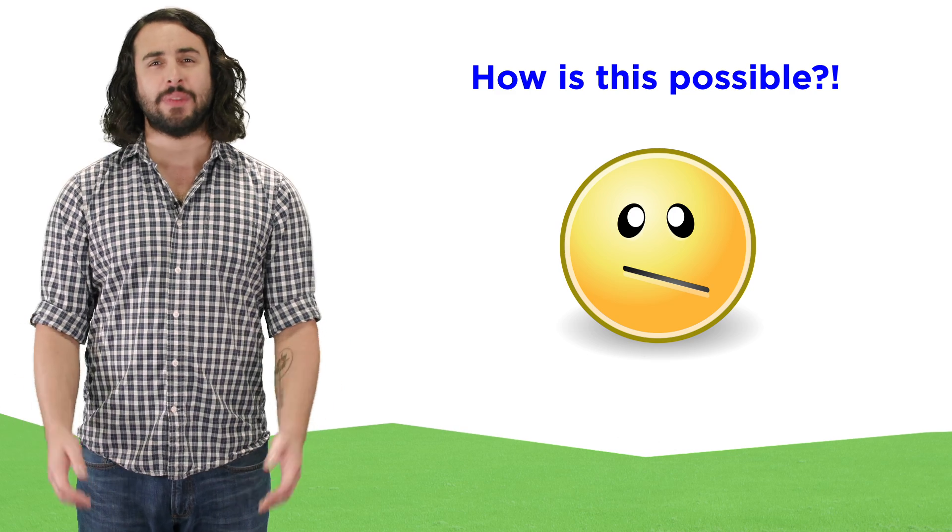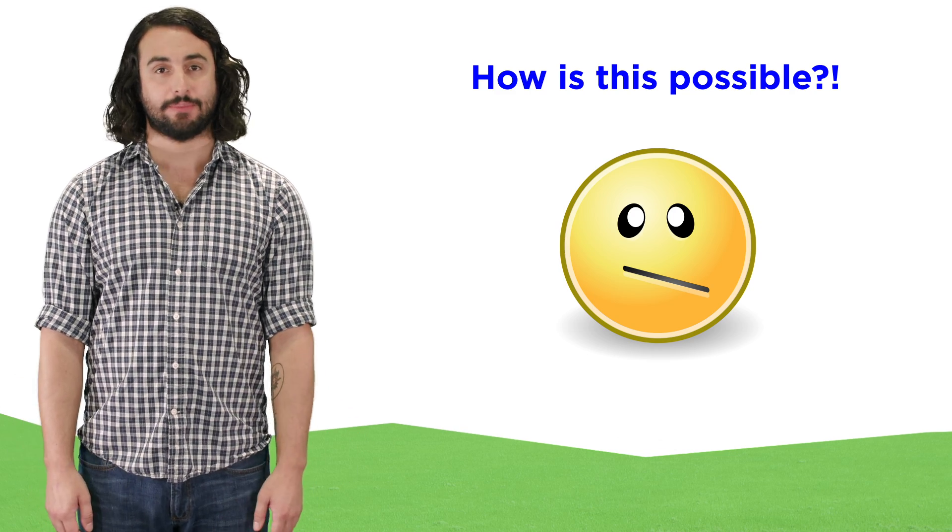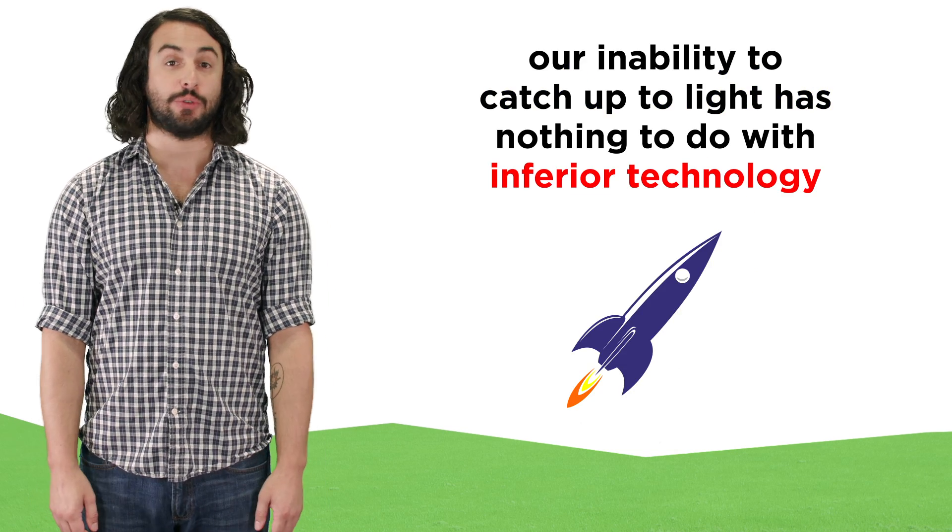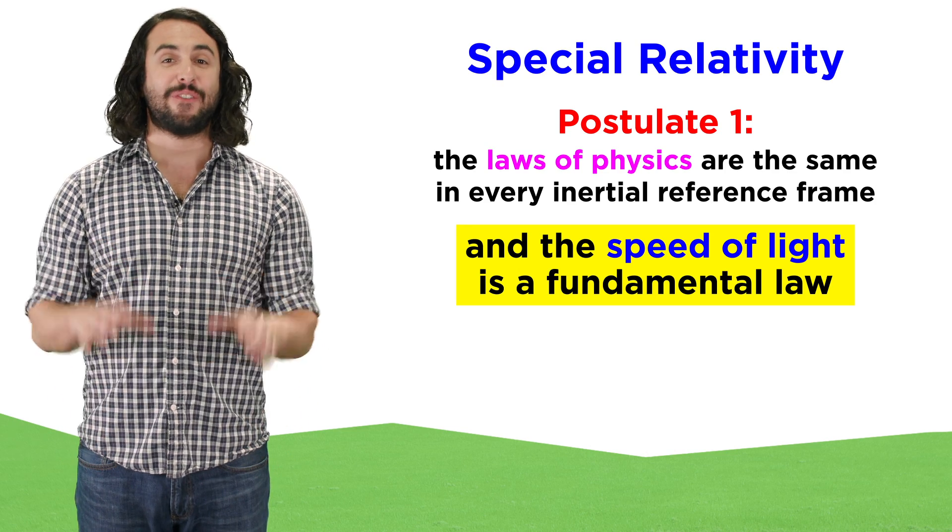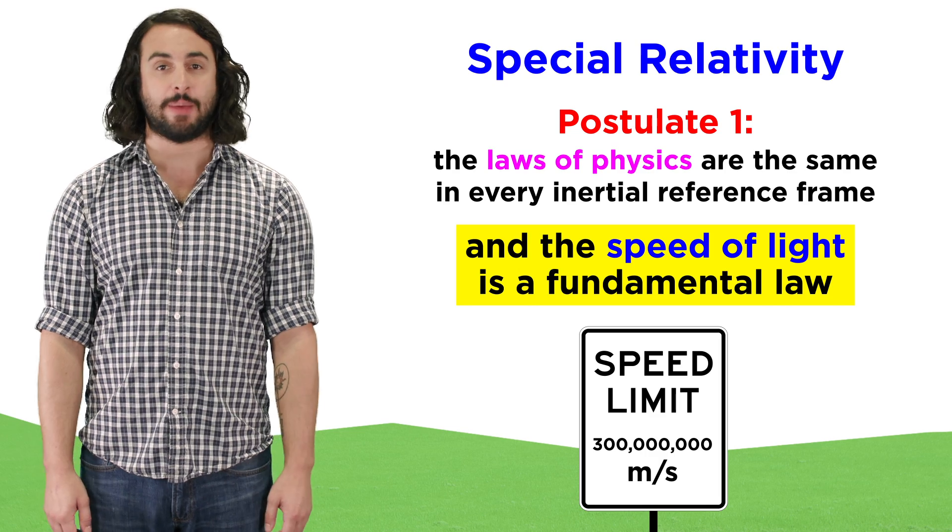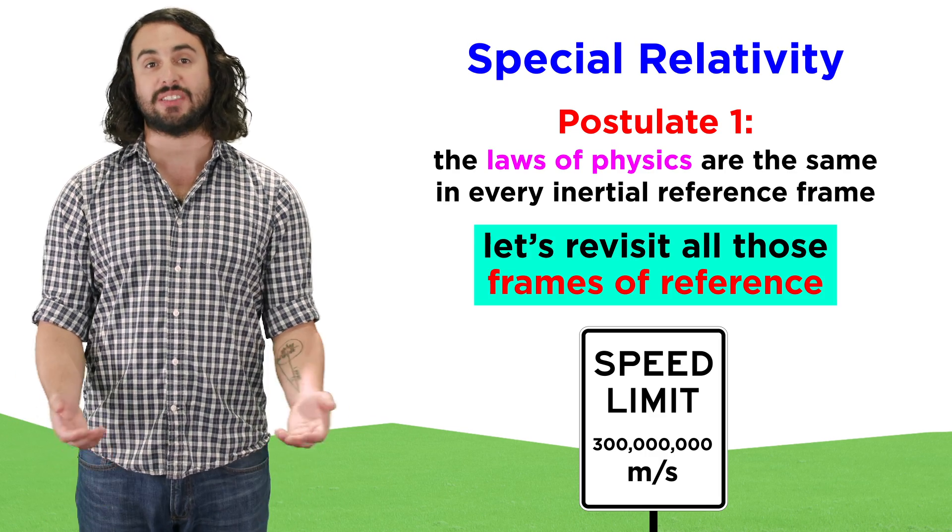But how can this be possible? How is c always the same, and why can't we catch up to it? It's not just because we don't have the technology to go so fast. It's because the speed of light is a fundamental law of physics. It is the universal speed limit.